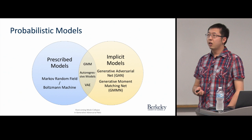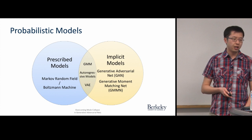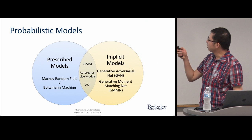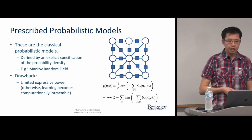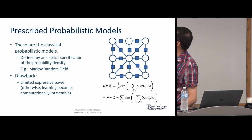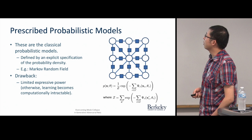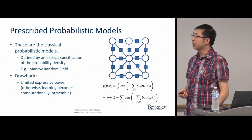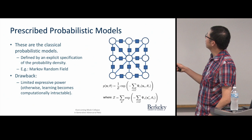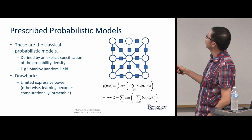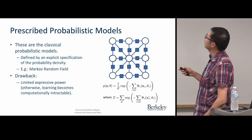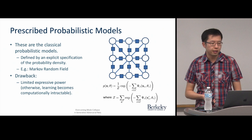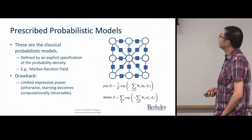There are two broad classes of probabilistic models: prescribed models and implicit models, with some methods in the intersection of the two. Prescribed probabilistic models are classical models you know from textbooks, defined by an explicit specification of the probability density. For example, Markov random fields are a classical example. The key distinguishing characteristic is that you know exactly the mathematical form of the probability density, though you may not be able to evaluate the partition function. The drawback is limited expressive power — adding higher-order general potentials makes learning computationally intractable.